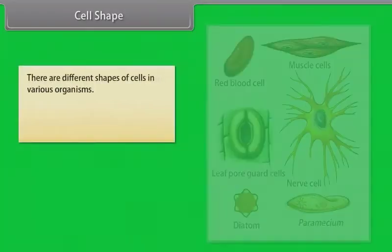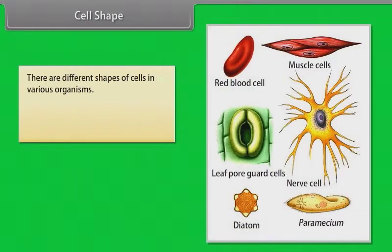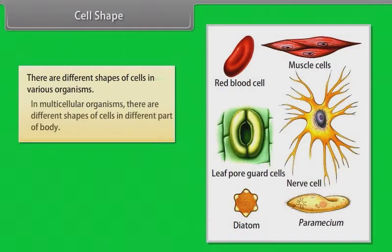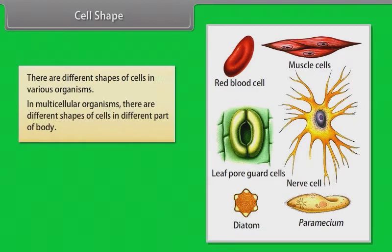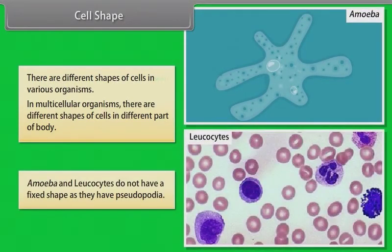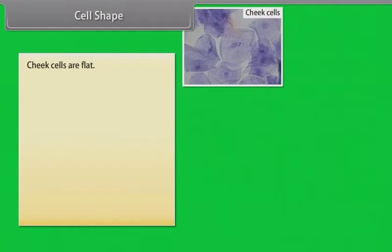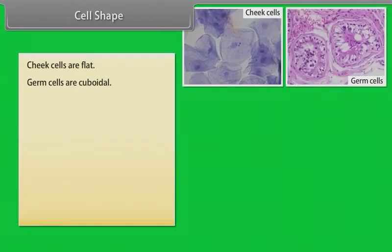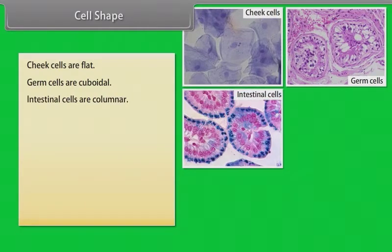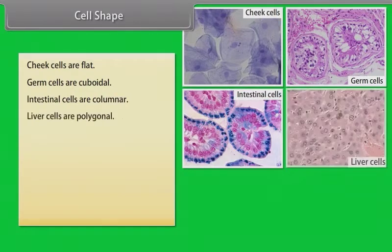There are different shapes of cells in various organisms. In multicellular organisms, there are different shapes of cells in different parts of the body. Amoeba and leukocytes do not have a fixed shape as they have pseudopodia. Cheek cells are flat, germ cells are cuboidal, and intestinal cells are columnar.